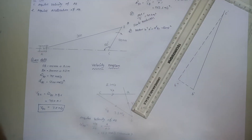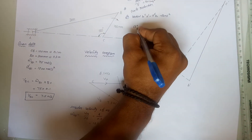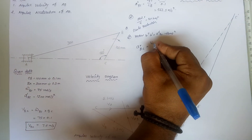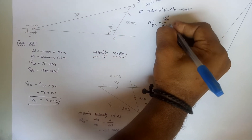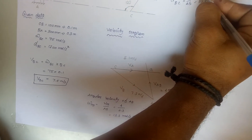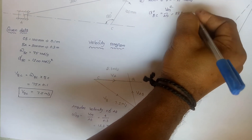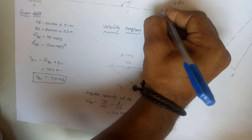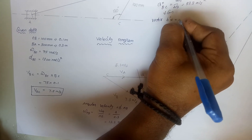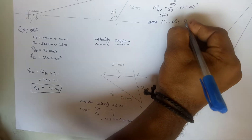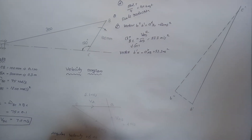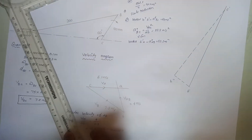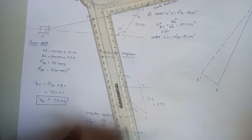Perpendicular to AB: A radial AB equals velocity of AB squared divided by AB, which gives 53.3 meters per second squared. This vector B dash X equals A radial AB equal to 53.3 meters per second squared. B dash X is parallel to BA.